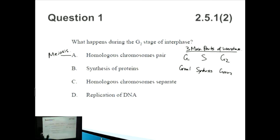B, the synthesis of proteins - yeah, possibly it could be. You could have the production of proteins, which is the growth which we're talking about in G2, so let's leave that for now. Homologous chromosomes separate? Once again this is to do with meiosis, so we're going to ignore C.